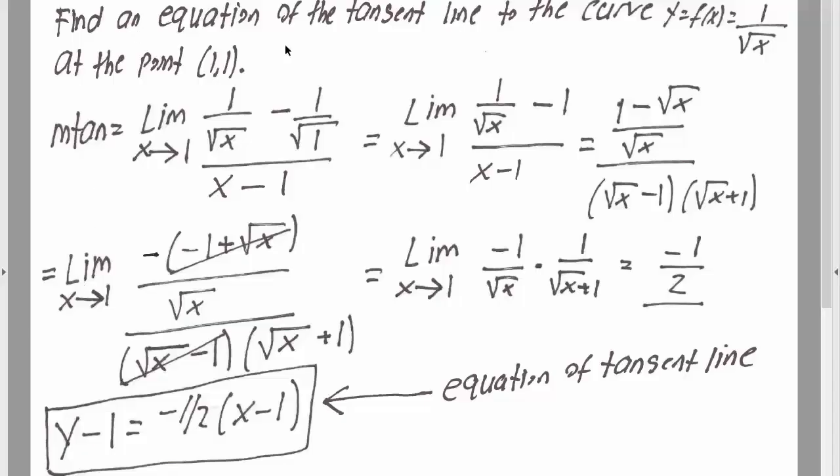Okay, so for this question we're finding an equation of the tangent line to the curve y equals f of x equals 1 divided by square root of x at the point (1, 1).